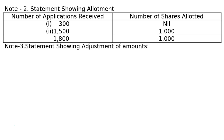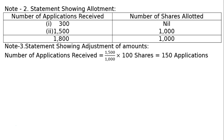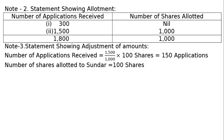Note 3: statement showing adjustment of amounts. 1,500 applications were allotted 1,000 shares; 1,000 shares were allotted to 1,500 applications. Hence, the person who was allotted 100 shares — we received from him 150 applications. Number of applications received = (number of applications received / number of shares allotted) × number of shares allotted to the person. Number of shares allotted to Sundar: 100 (given in the question). Number of applications received from Sundar: 150.